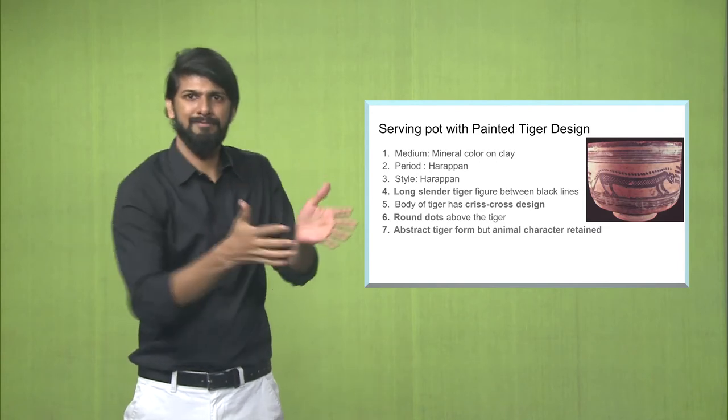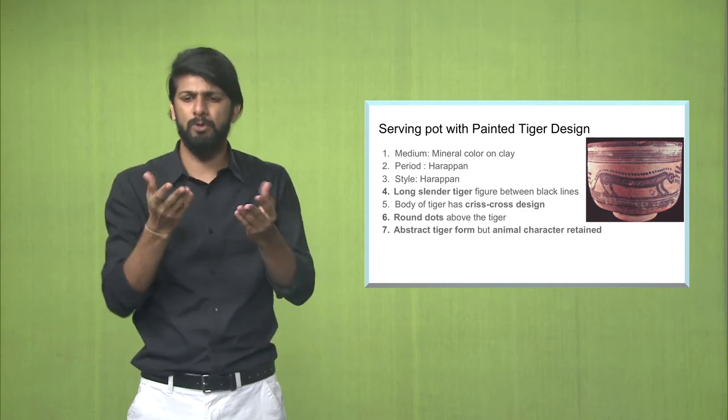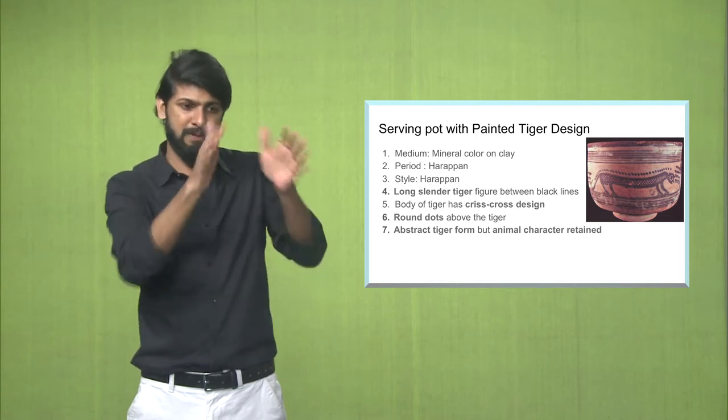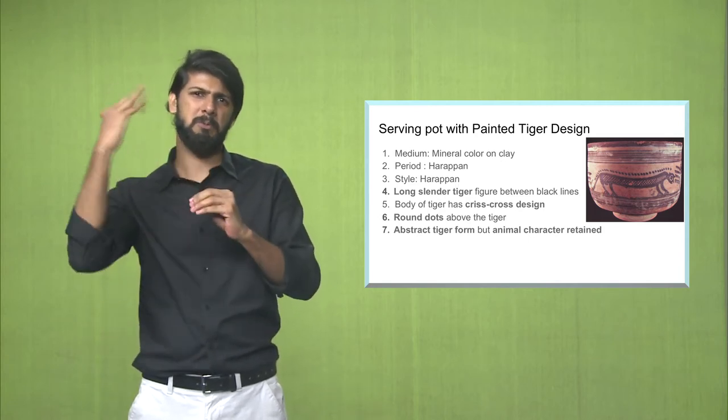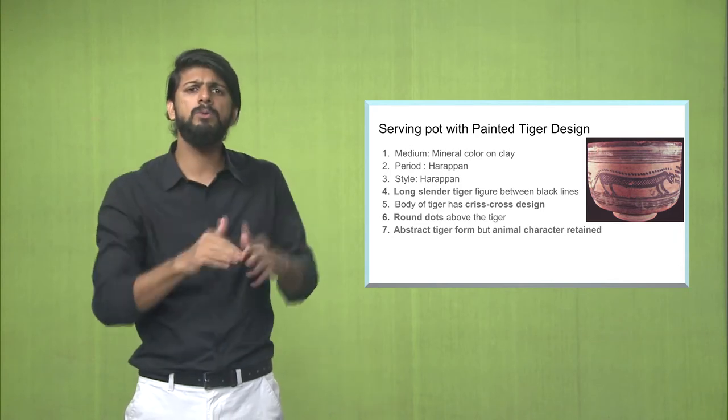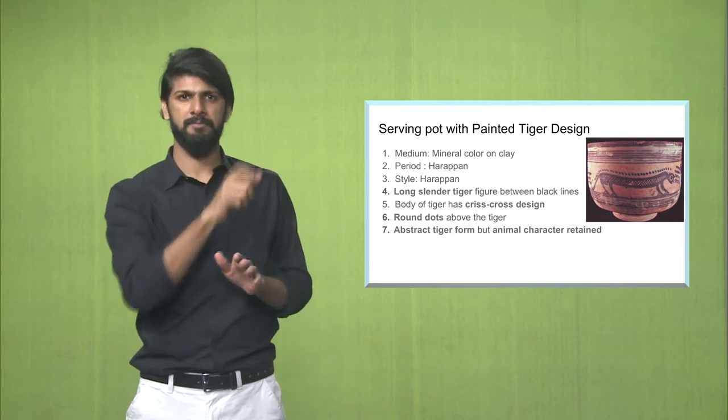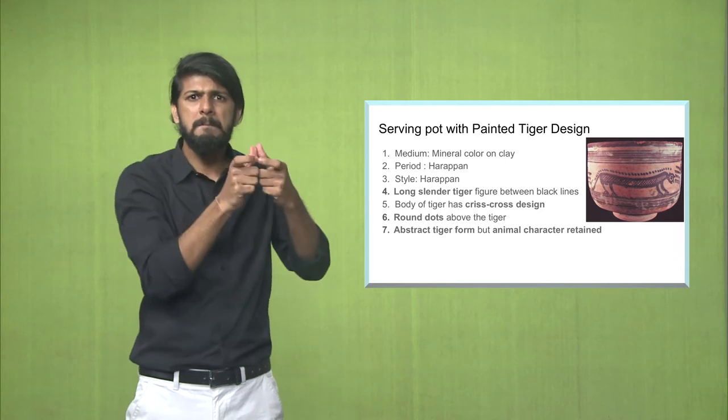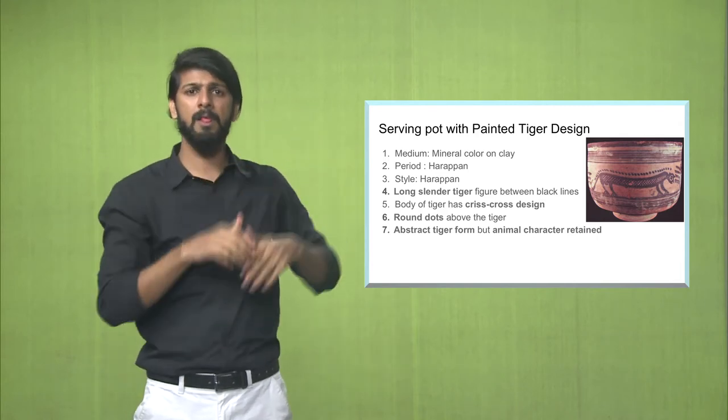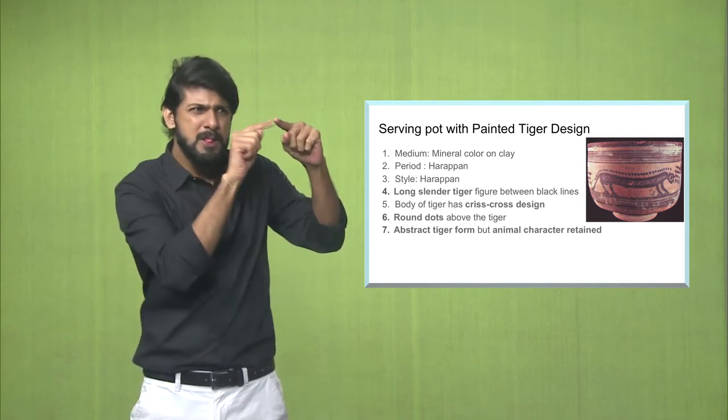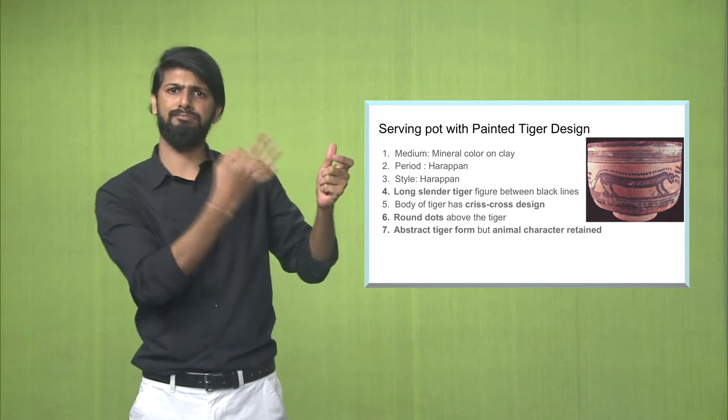The third painting here is on a serving pot used to serve food, and it has a painted tiger design. The medium is clay plus mineral colors. So after the pot was shaped, colors were added. The period is somewhere similar to the 2500 BC period. The style is Harappan, people of the Indus Valley Civilization, their traditional style. You would see the animal, the tiger here has a long slender elongated figure and has black lines in between in criss cross design in the body of the tiger. It's quite beautiful.